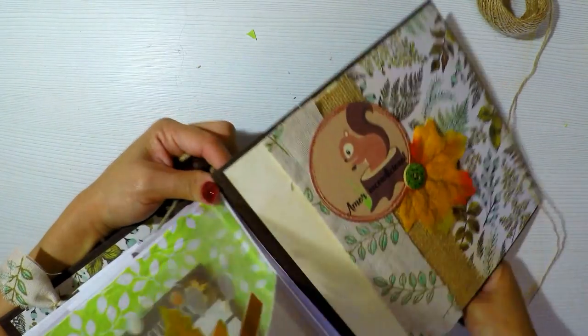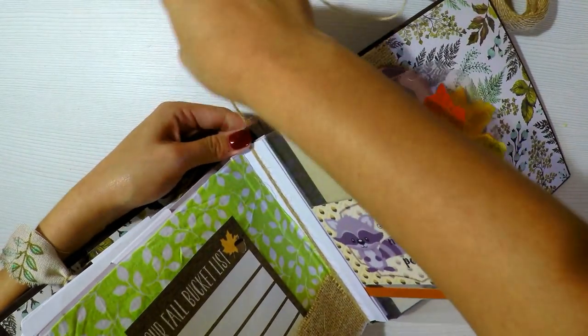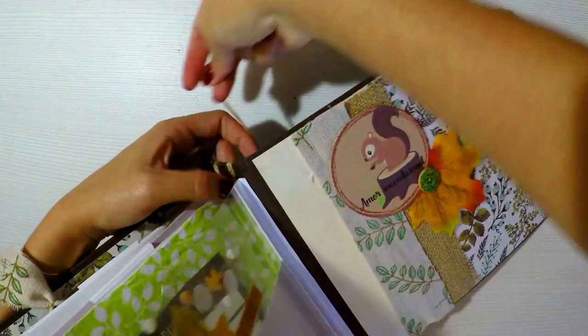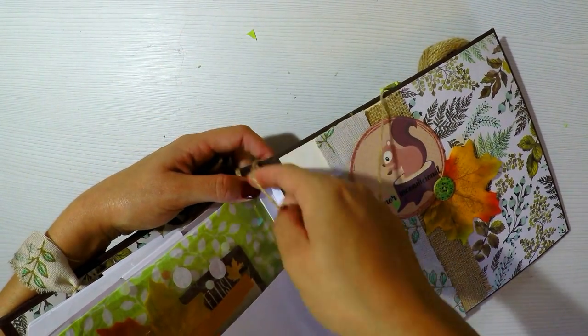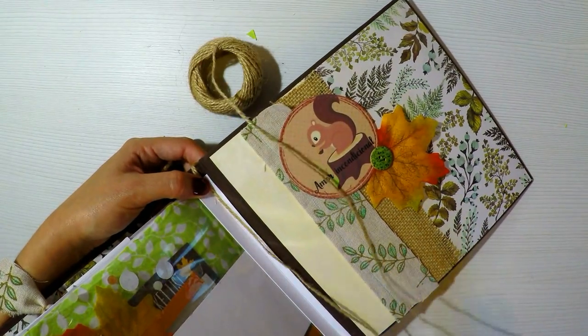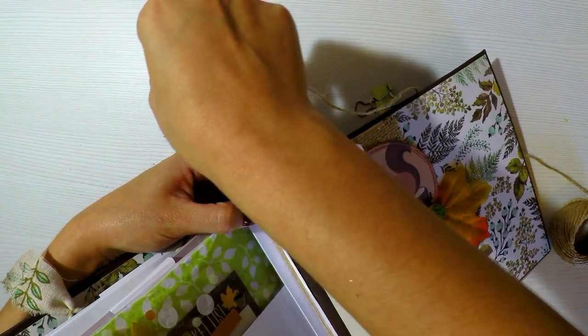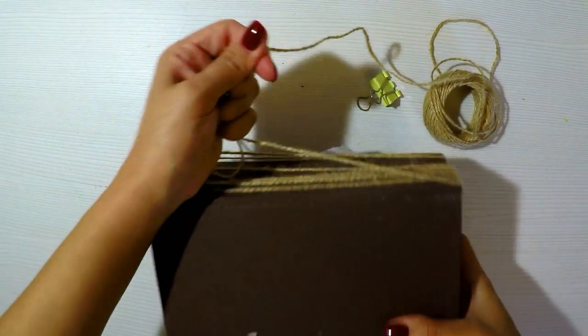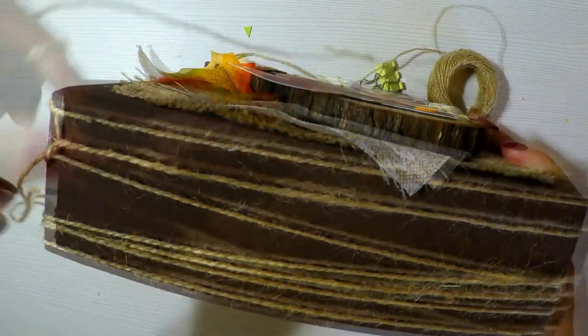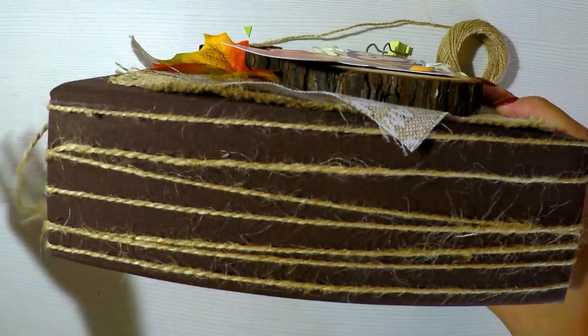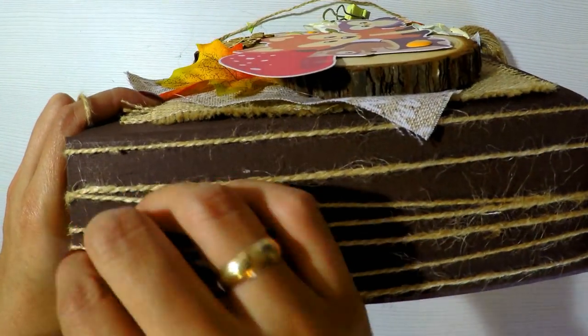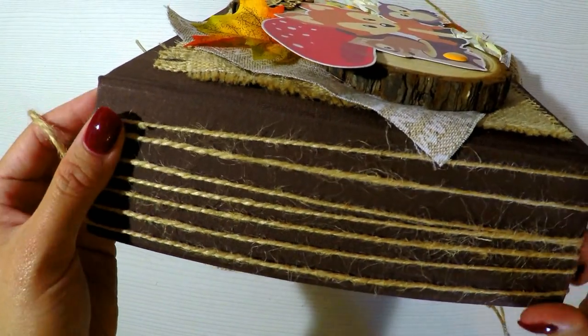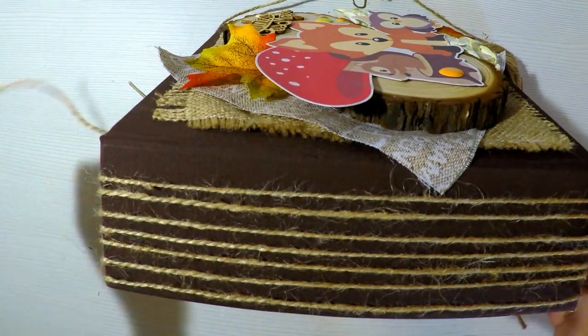Entonces vamos a reforzar dando vueltas con un hilo de yute, el que tenga, para que esta espina quede un poquito más fuerte. También podríamos abrirle unos agujeritos entre cada espacio y ir cosiendo lo que sería con el hilo de yute. Yo lo voy a hacer así porque es mucho más fácil y a mí me gusta el efecto que da al lomo este hilo así todo colocado. Lo voy a ir acomodando para que quede todo bien puesto y quede simétrico de un sitio y de otro. Y a mí me gusta mucho el efecto que hace.